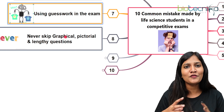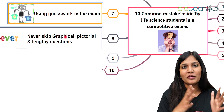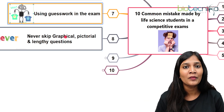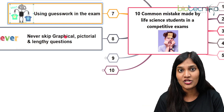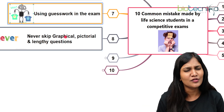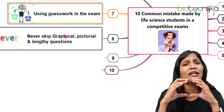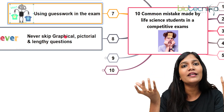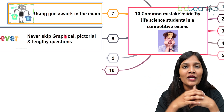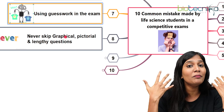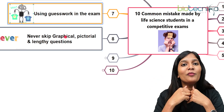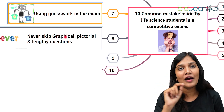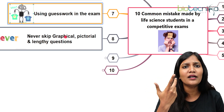The next mistake is skipping graphical, picture-based, or long passage questions. When we see a long passage question, we think 'let me skip it immediately.' But long answer questions are often the simplest. The paragraphs may be very large, but they would have given a definition or explained an experiment to make understanding easier. The answer can be easily derived from the question itself. We tend to think it's the toughest and skip it, but if you read it quickly, you'll often find it's easy.